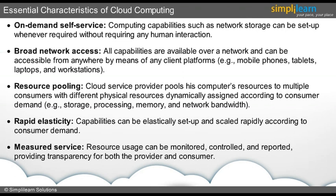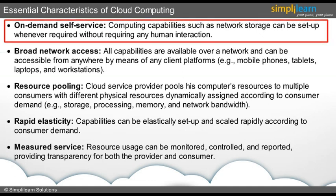The passenger has the flexibility to book a ticket by himself or herself using a web portal and a login ID. The process is highly simplified and does not require any human interaction. Right from choosing your train to preference of berth, it is all an automated process. This is the on-demand self-service that cloud offers, where the consumer can automatically set up computing capabilities such as storage and server time as and when the need arises.